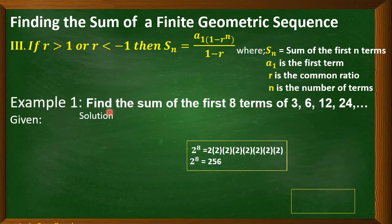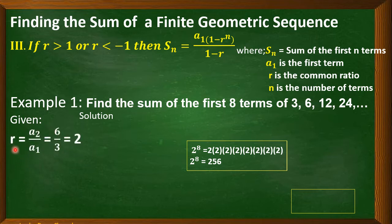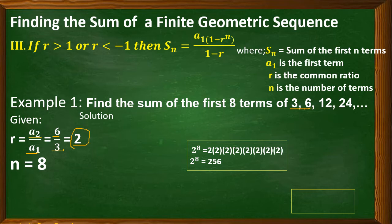Example: find the sum of the first 8 terms of 3, 6, 12, 24. For our solution, first determine the given data. The common ratio: a sub 2 divided by a sub 1 gives 6 divided by 3, equal to 2. So the common ratio is 2. Next, n is equal to 8 because we are asked for the sum of the first 8 terms, and the first term is equal to 3.